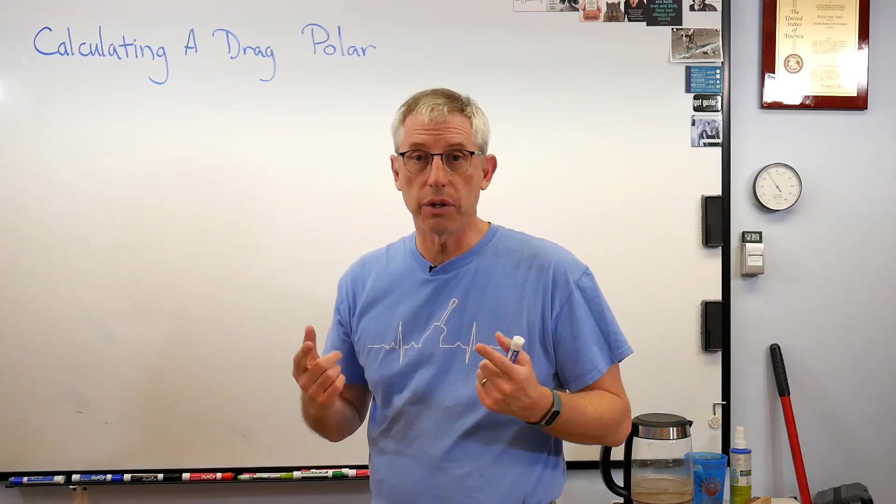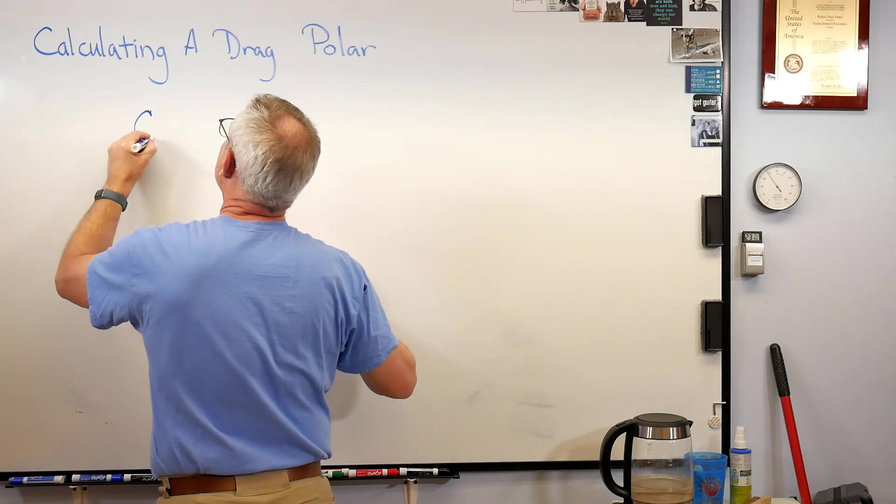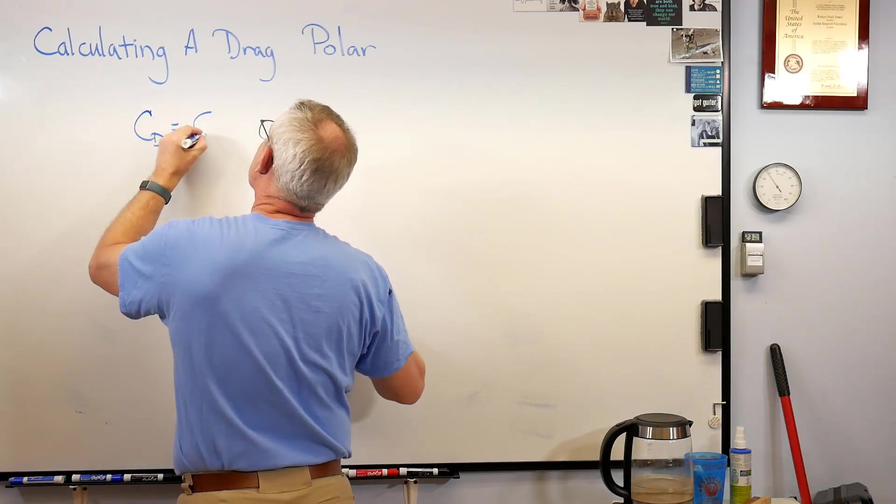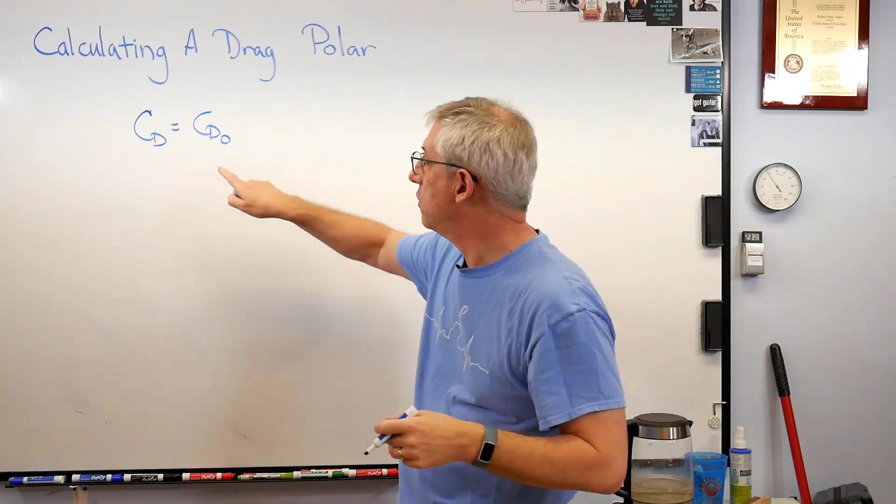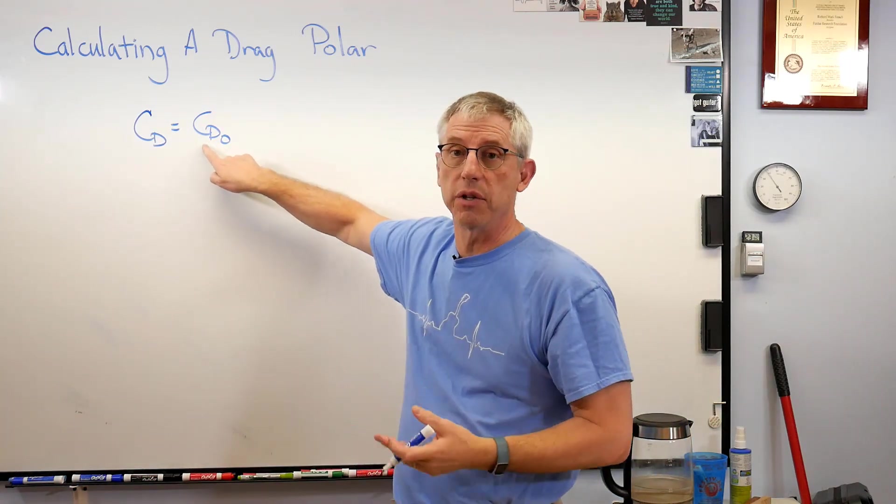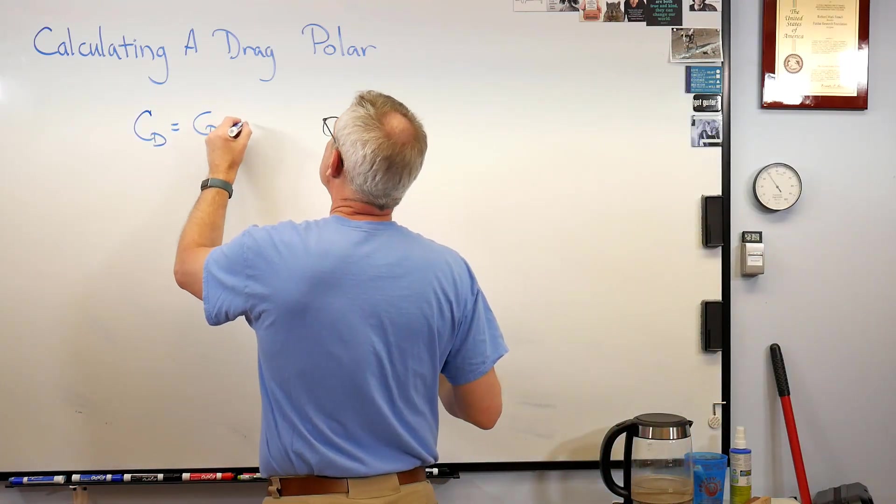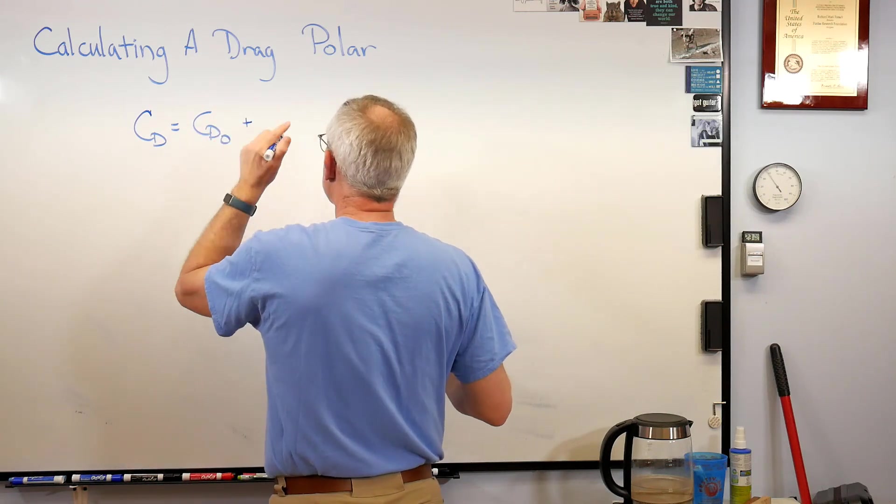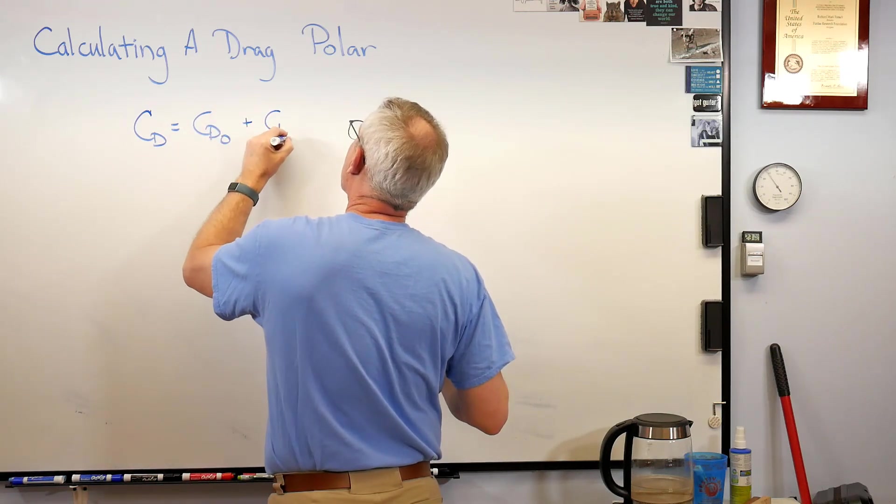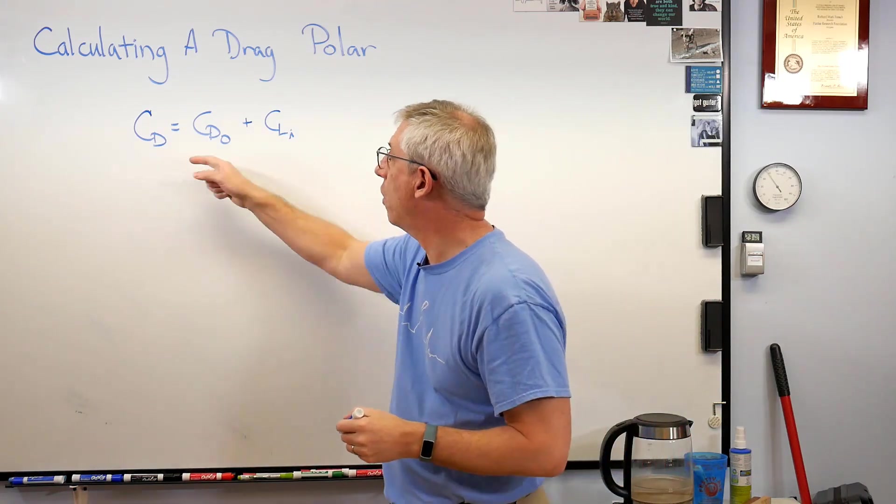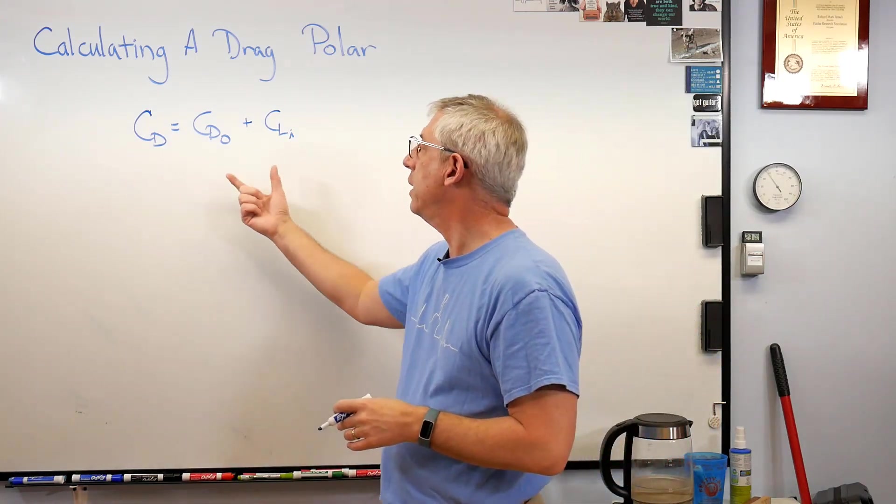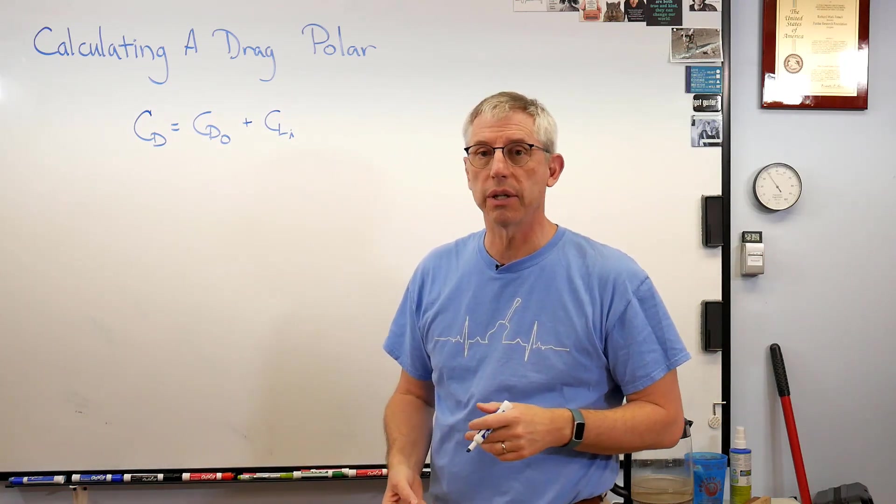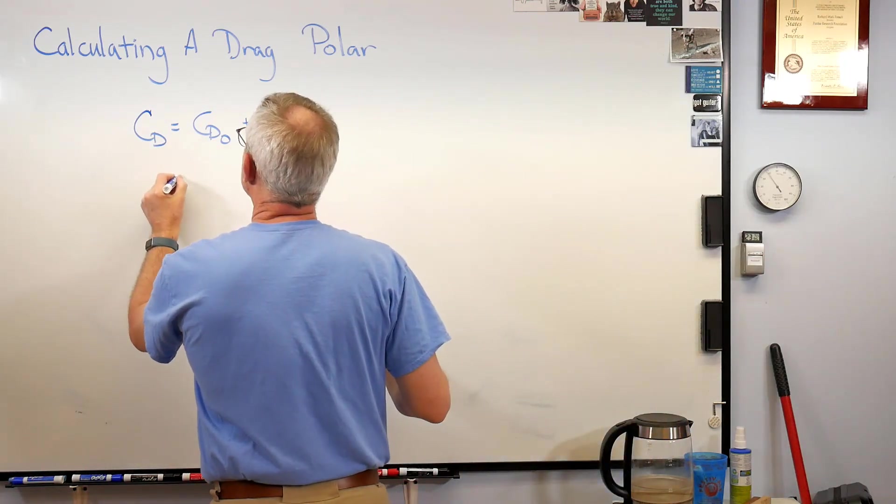We have two components, let's write them down. The total drag coefficient of the airplane is the form drag, which is called CD zero. When you have zero lift, what you got left is form drag, so that's why they call it CD zero, plus CD induced. Now these are coefficients, they're just numbers, they don't have units. In engineering talk, those are called dimensionless.